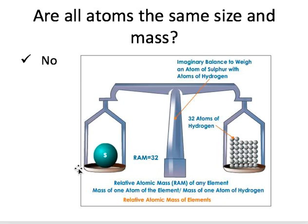We want to be able to weigh atoms instead of counting them. Sulfur is a much bigger atom than hydrogen, so a mole of sulfur — even though it's 6.02 times 10 to the 23rd atoms — will weigh a lot more than a mole of hydrogen atoms. Think of sulfur as the bowling ball and hydrogen as the ping-pong ball. A mole is still just a number: 6.02 times 10 to the 23rd.